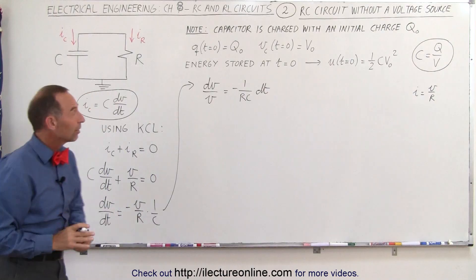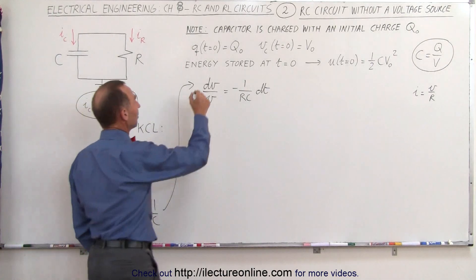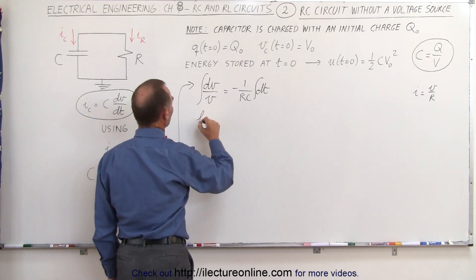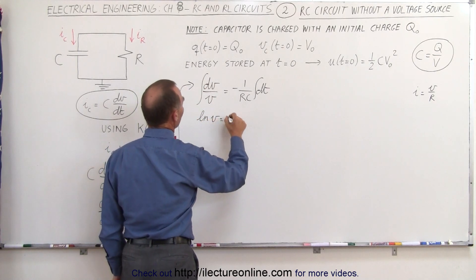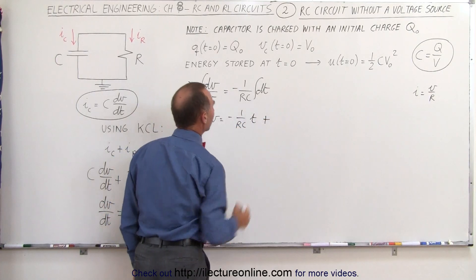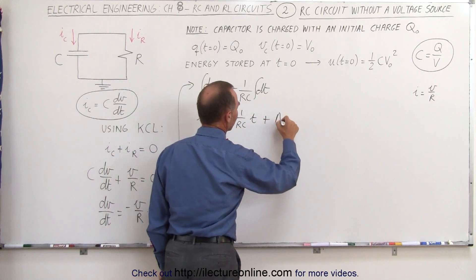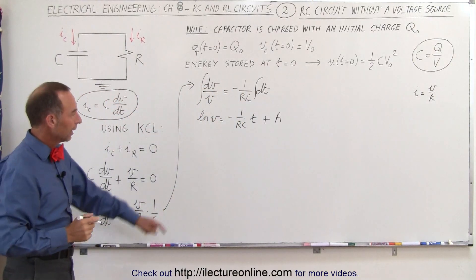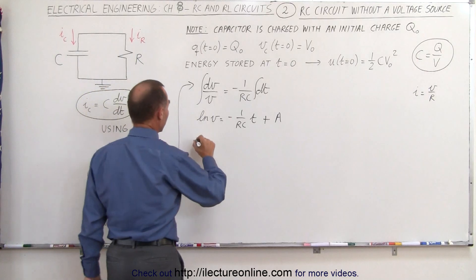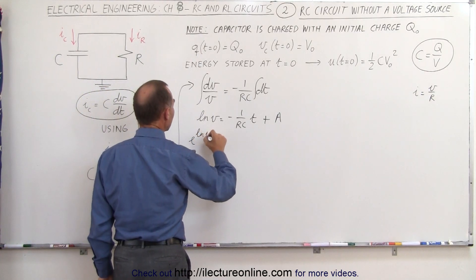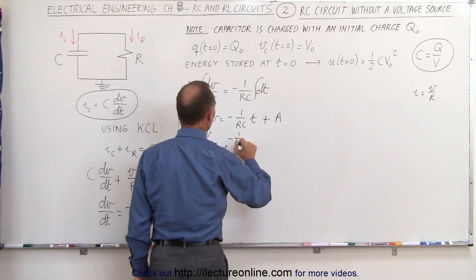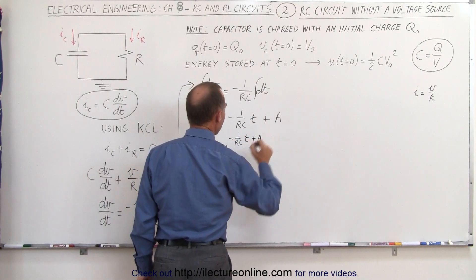We have now separated the variables and can integrate both sides. Integrating gives us the natural log of V equals minus 1 over RC times t, plus a constant of integration — let's call it A. To get rid of the natural log, we take the anti-log of both sides, so e to the natural log of V equals e to the quantity (minus t over RC plus A).